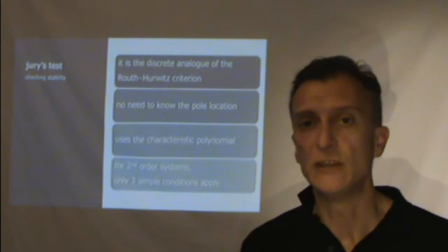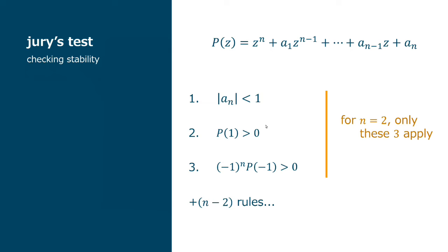But, sometimes, you can use this test just for quickly examining if a system is stable or not. And if you have the characteristic polynomial P(Z), the conditions are that this last element An should be less than 1 in magnitude. So, the absolute value should be less than 1. The value of the polynomial when you replace Z by 1 should be positive. And P(-1), so if you replace Z by minus 1, should be positive as well, or negative depending if the N is odd or even.